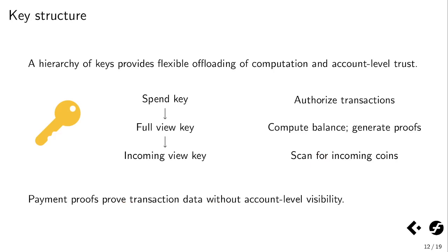There's a hierarchy of keys in Spark that allows for opt-in visibility and operation offloading. We have the spend key, which can authorize transactions, but also two different derived keys. The spend key derives the full view key, which allows an entity possessing it not to authorize transactions, but to compute the balance by identifying incoming and outgoing coins. It can also generate proofs that are often computationally expensive, without actually authorizing a transaction. The full view key can be used to derive the incoming view key, which allows an entity to scan for incoming coins but not outgoing coins and not authorize transactions.